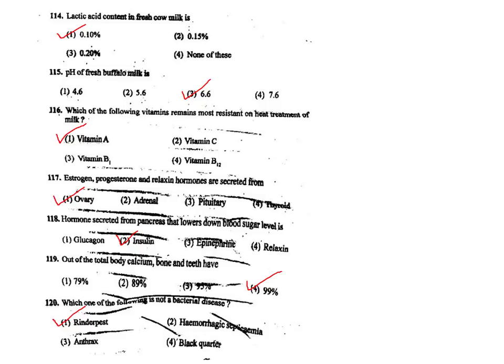Q115. pH of fresh buffalo milk is 6.6. The correct answer is option 3.